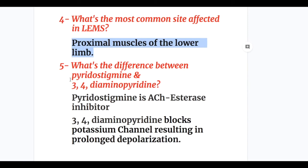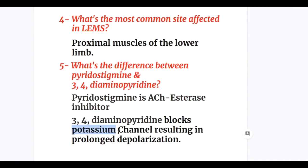Question five: what's the difference between pyridostigmine and 3,4-diaminopyridine? Pyridostigmine is an acetylcholinesterase inhibitor, whereas 3,4-diaminopyridine blocks the potassium channel, resulting in prolonged depolarization and increased acetylcholine release.